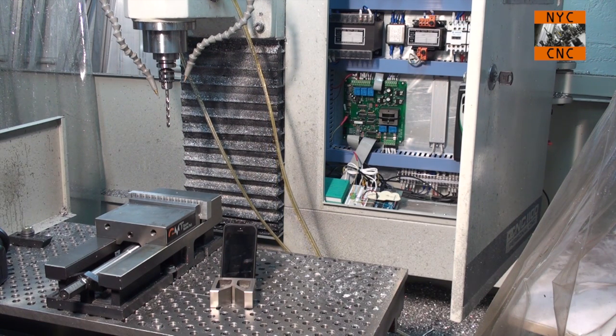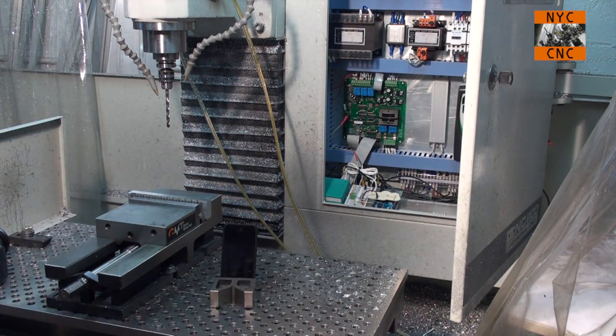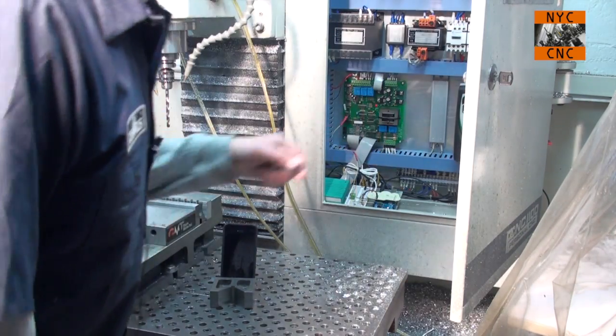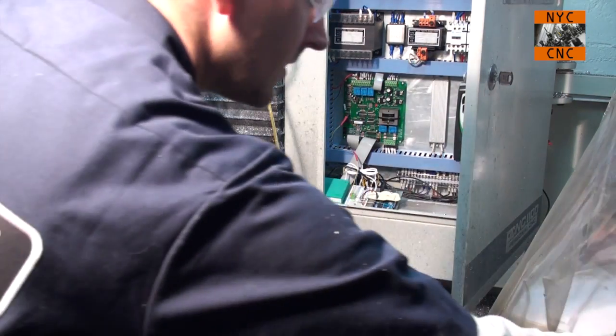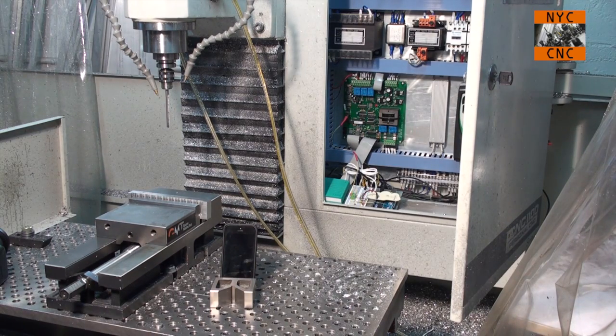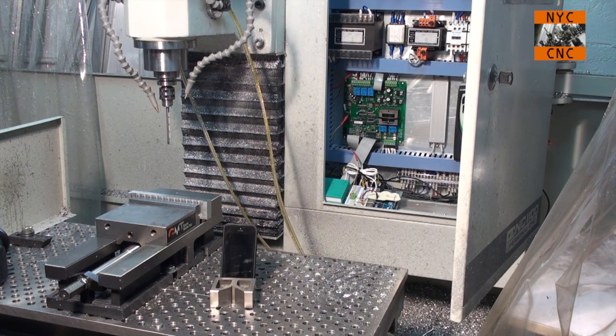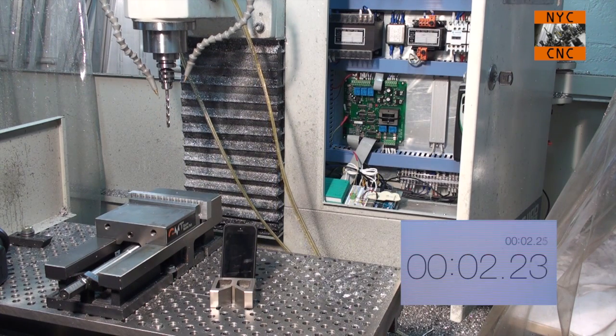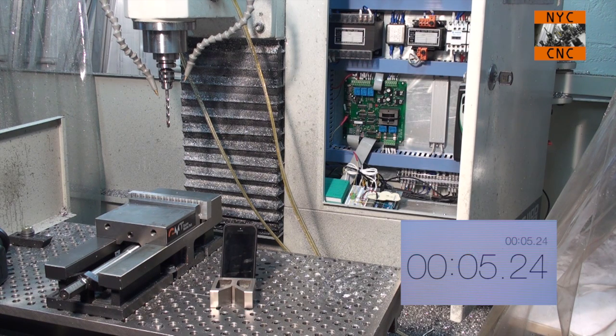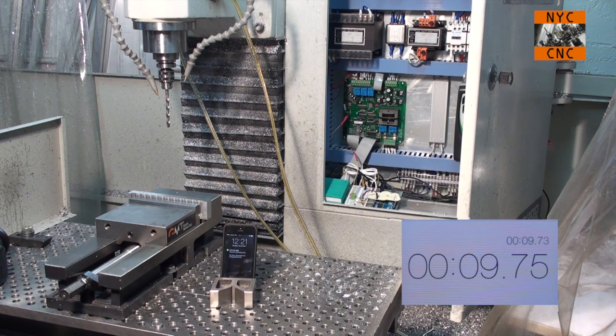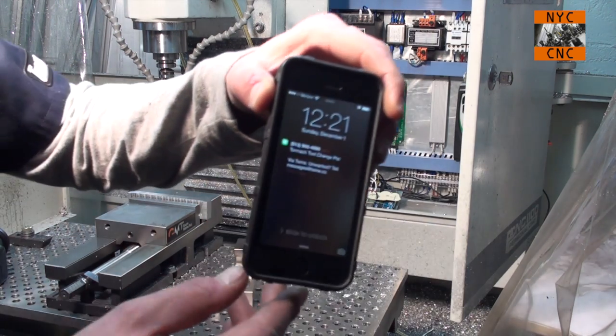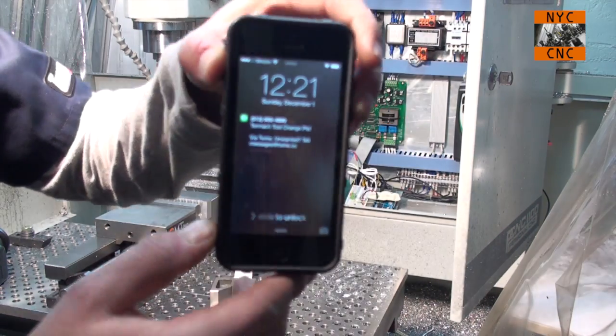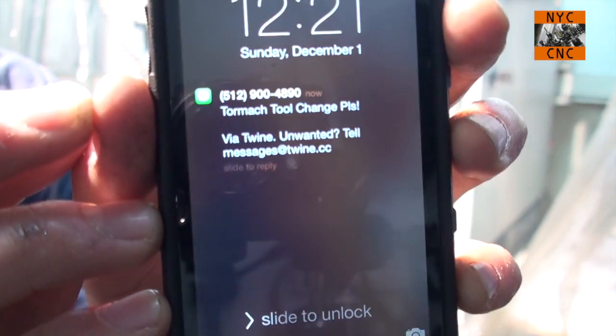Now we'll go ahead and turn it on. We'll run our program and we'll see how long the delay is for us to get a text message. We'll see how long the delay is. We can get it to focus here. There we go.